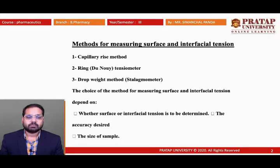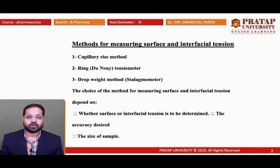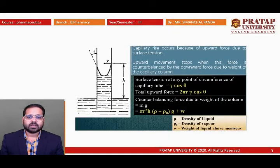There are different methods by which we can measure the surface tension. The first method is known as the capillary rise method. The second is the du Noüy tensiometer or ring tensiometer method. The third is the drop weight method, also known as the stalagmometer. The choice of method depends on whether surface or interfacial tension is to be determined, the accuracy desired, and the size of the sample.